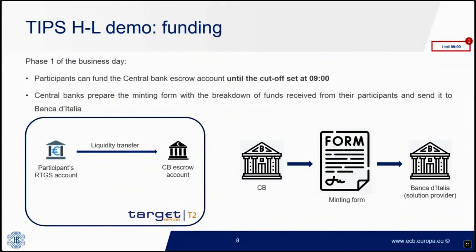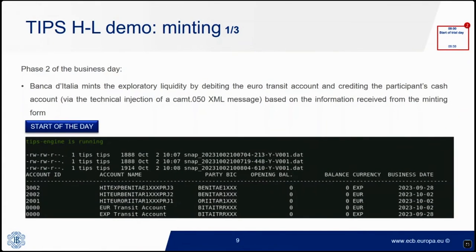In phase one, the funding process, participants are expected to fund their central bank's escrow account via a liquidity transfer from their RTGS account in the T2 production environment until 9 a.m. The central bank prepares the minting form with a breakdown of funds received from all participants and sends it to Banca d'Italia. In phase two, the minting process, the operator mints exploratory liquidity by debiting the Eurotransit account and crediting the participant's cash account.